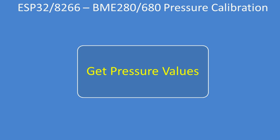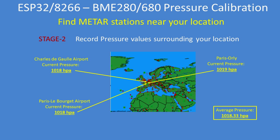The first thing to do is to get the pressure values and get an average. In this example, I've taken three airfields: Charles de Gaulle Airport, Paris Le Bourget, and Paris Orly. The pressure varies a little bit between the three, but the average for that area is 1018.3 hectopascal.